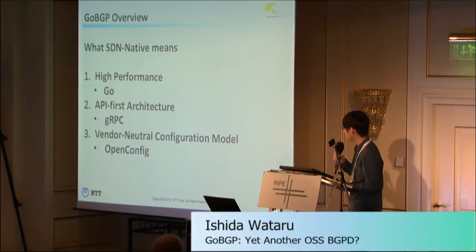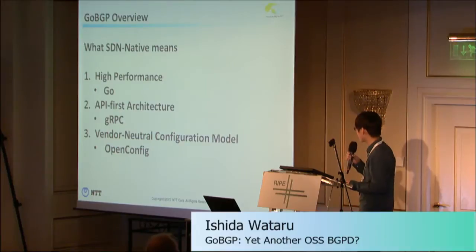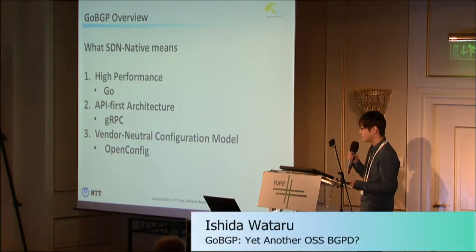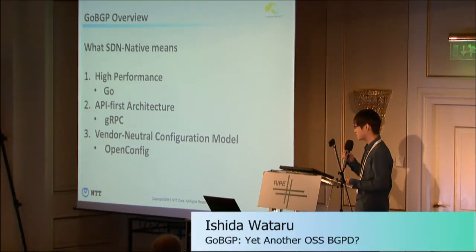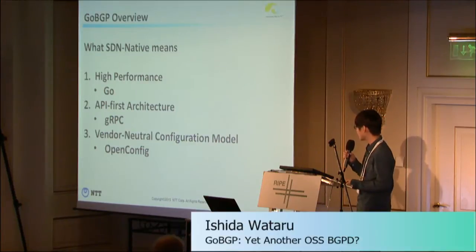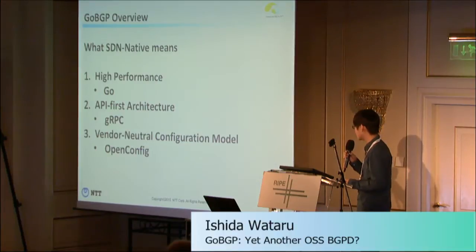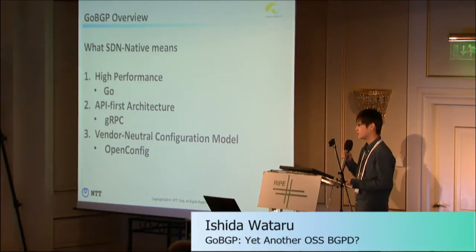So for a simple review, what SDN-native means for us: first is high performance, for which we use Go and exploit multiple CPU cores; second is API-first architecture, for which we use gRPC; and last is a vendor-neutral configuration model, for which we use OpenConfig.